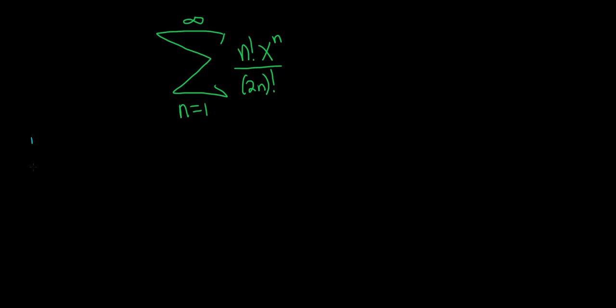To start with the ratio test, you take the limit as n approaches infinity of the absolute value of a sub n plus 1 over a sub n. We have three possible outcomes: if the result is less than 1, the series converges; if greater than 1, it diverges; if equal to 1, there is no information.